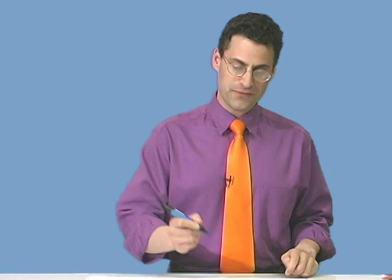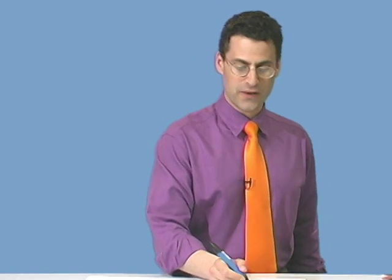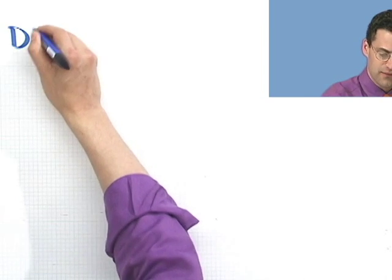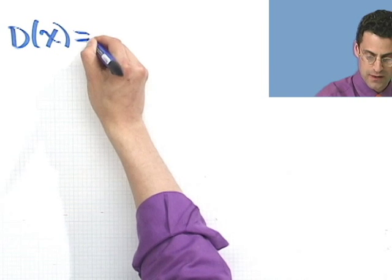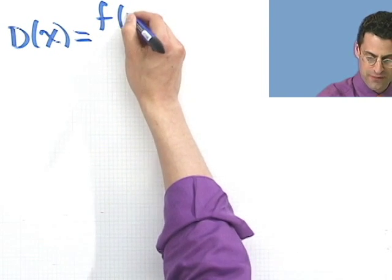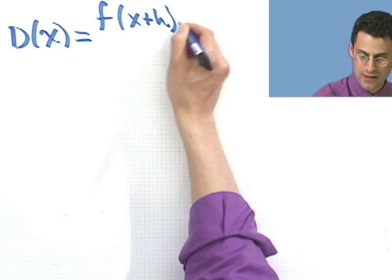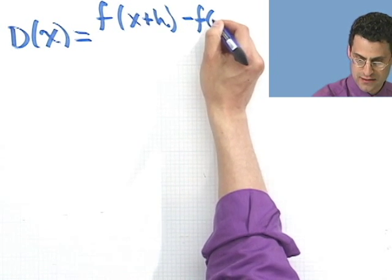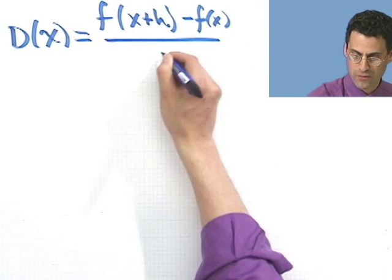One of the most important functions that occurs in mathematics, which comes out of calculus, something that you may see at some point soon, is the following combination to make this function. I'll call it D(x), and it equals f(x+h) minus f(x) all over h.